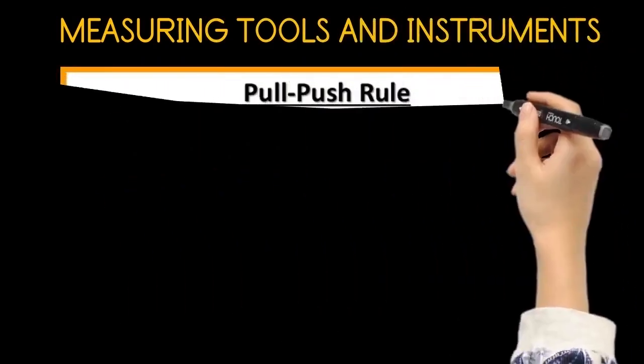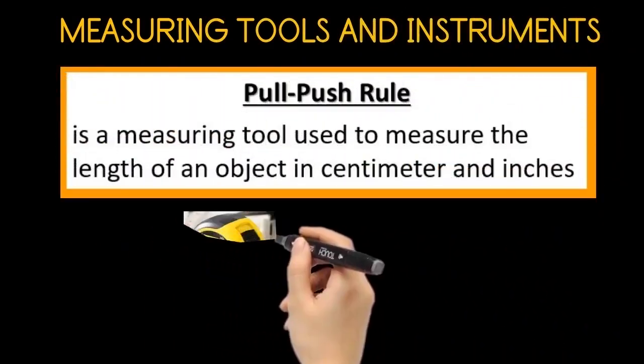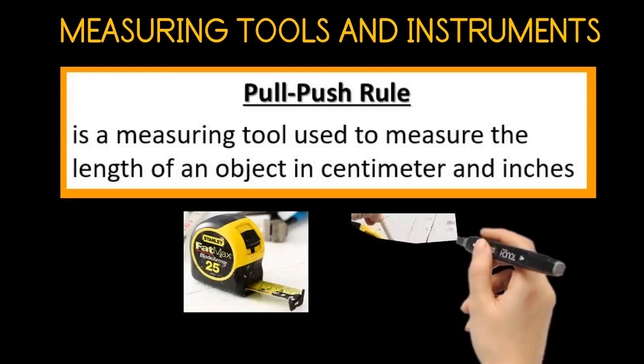The pull-push rule. The pull-push rule is a measuring tool used to measure the length of an object in centimeters and inches.